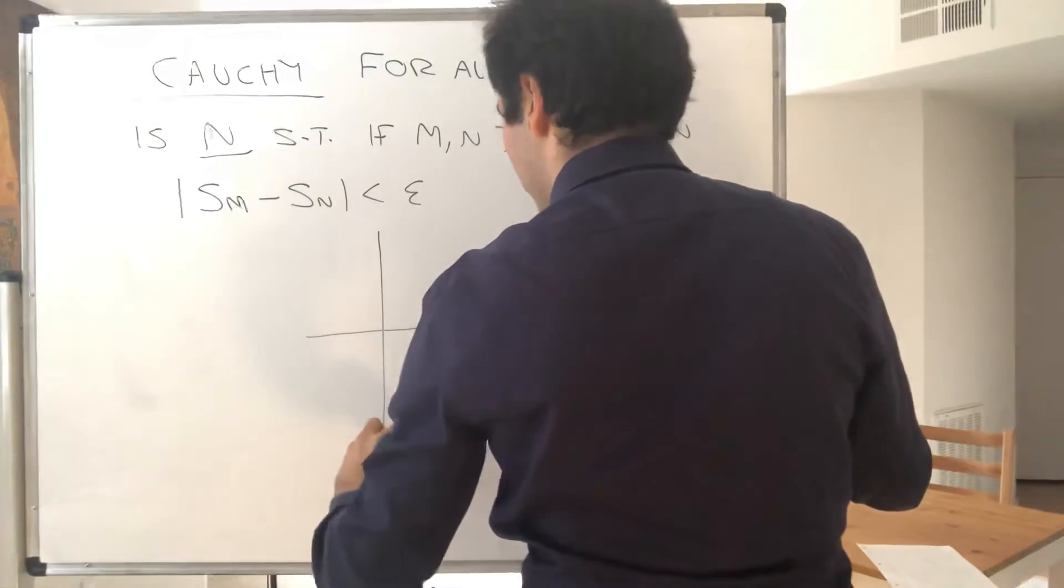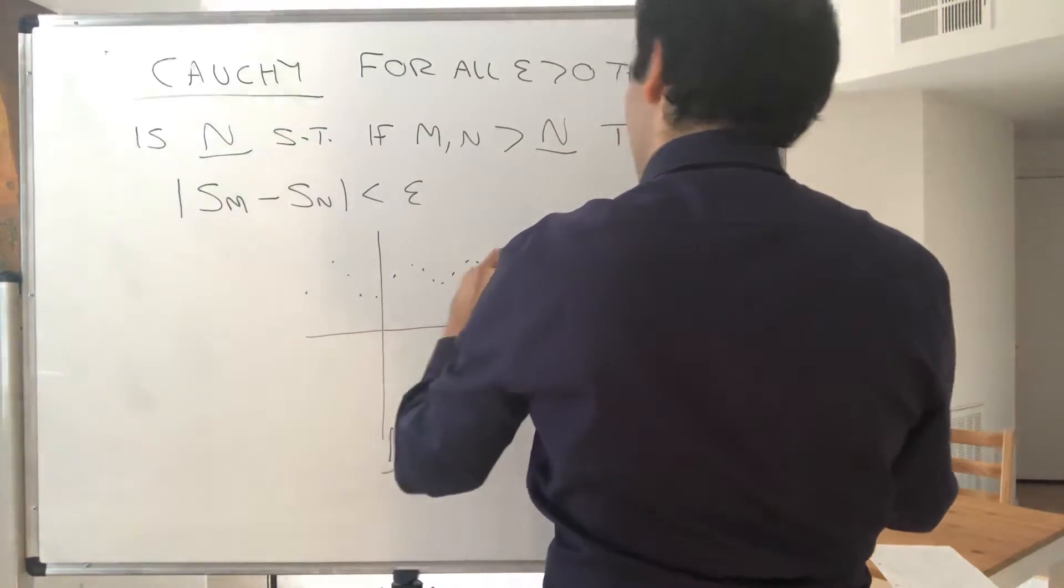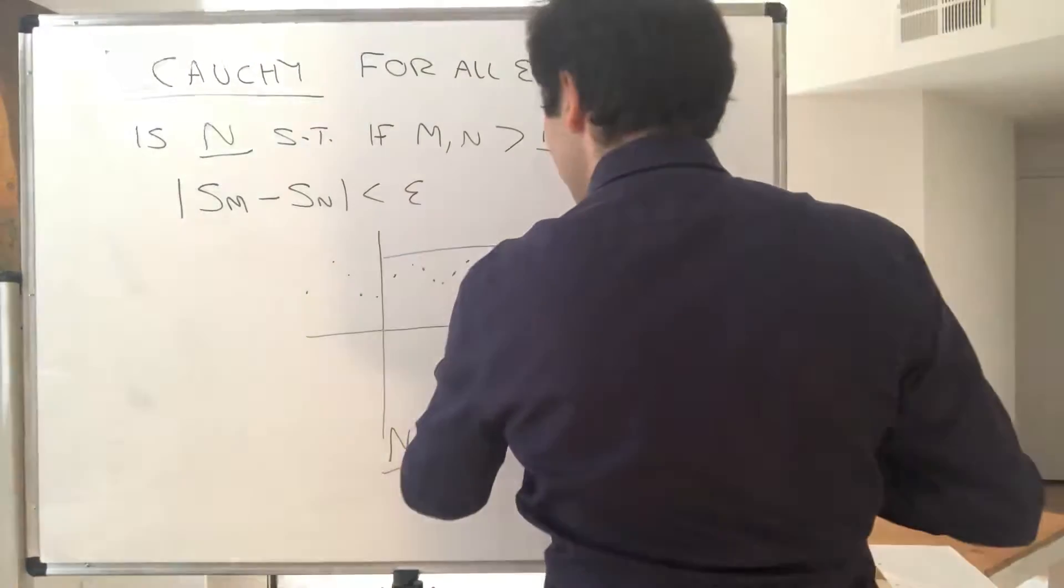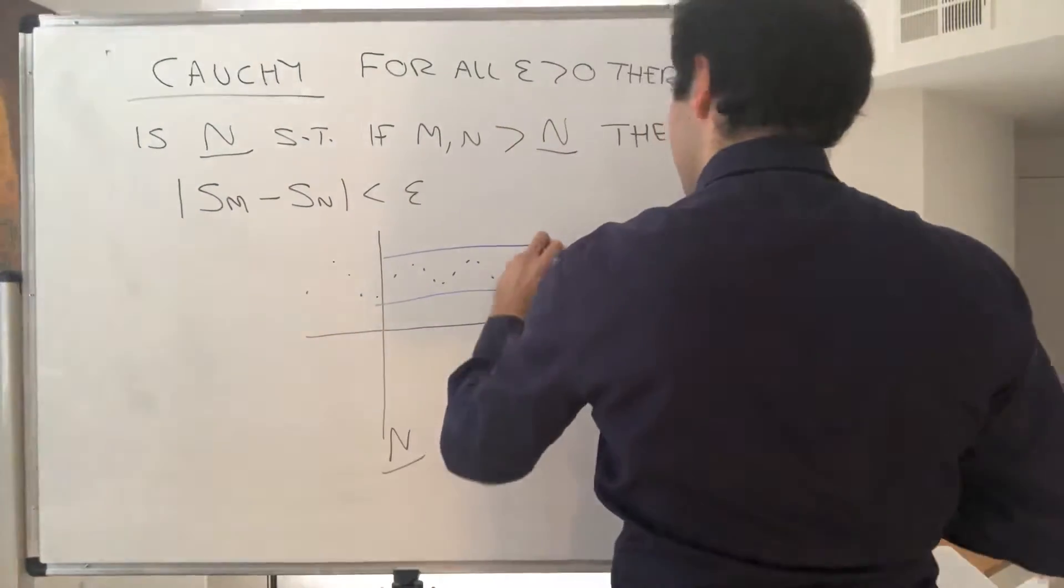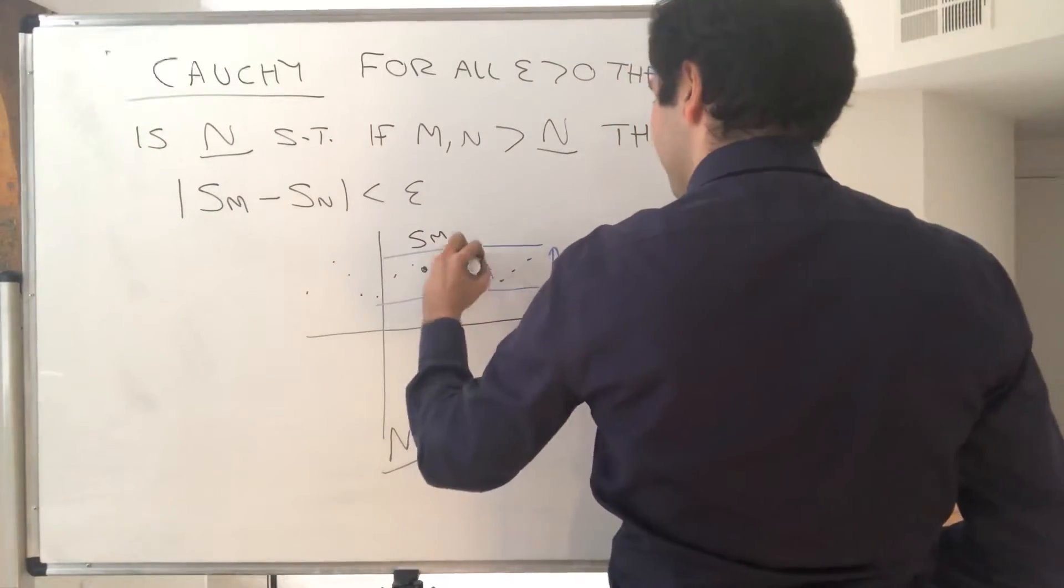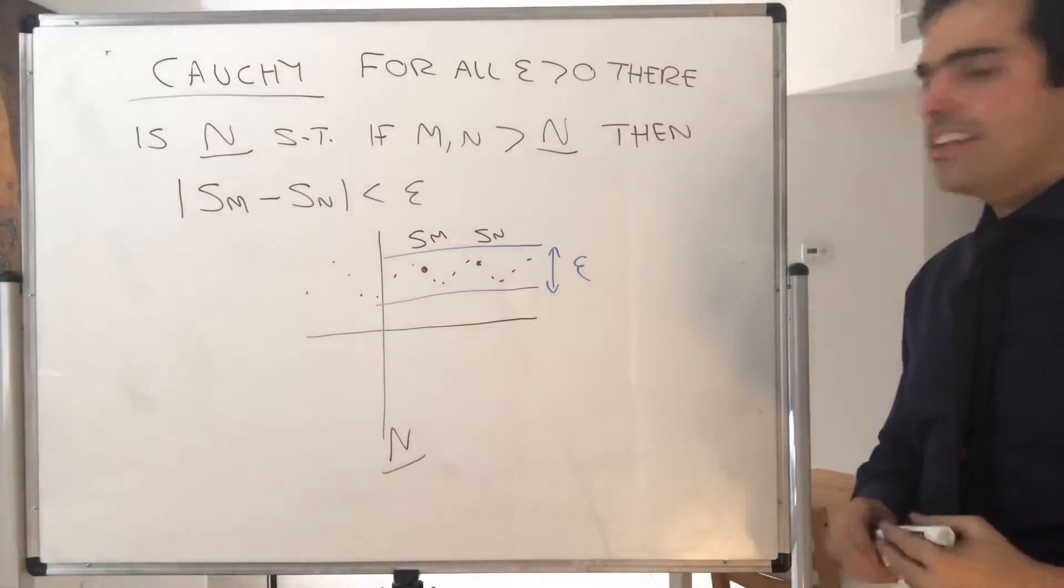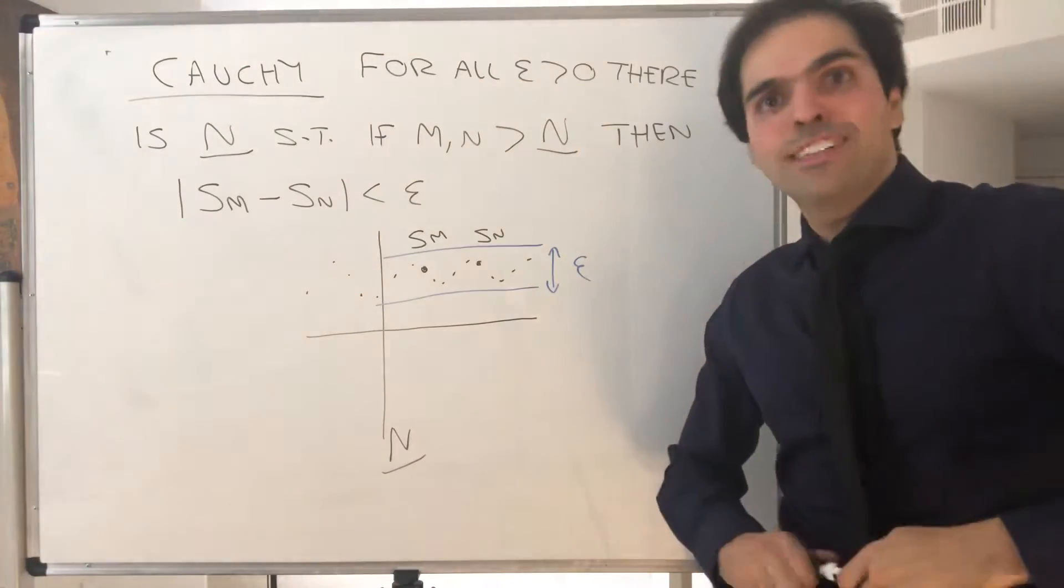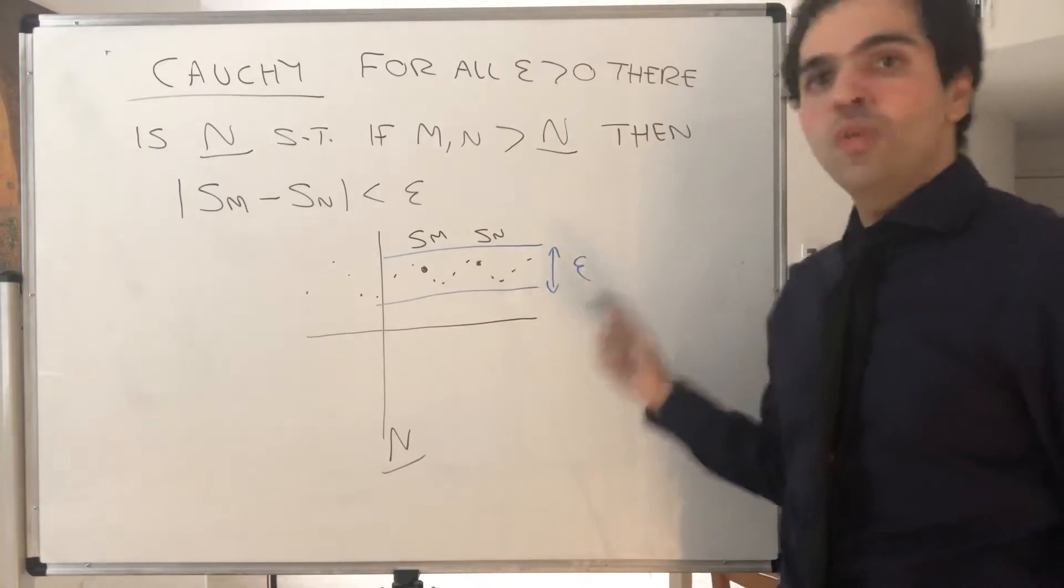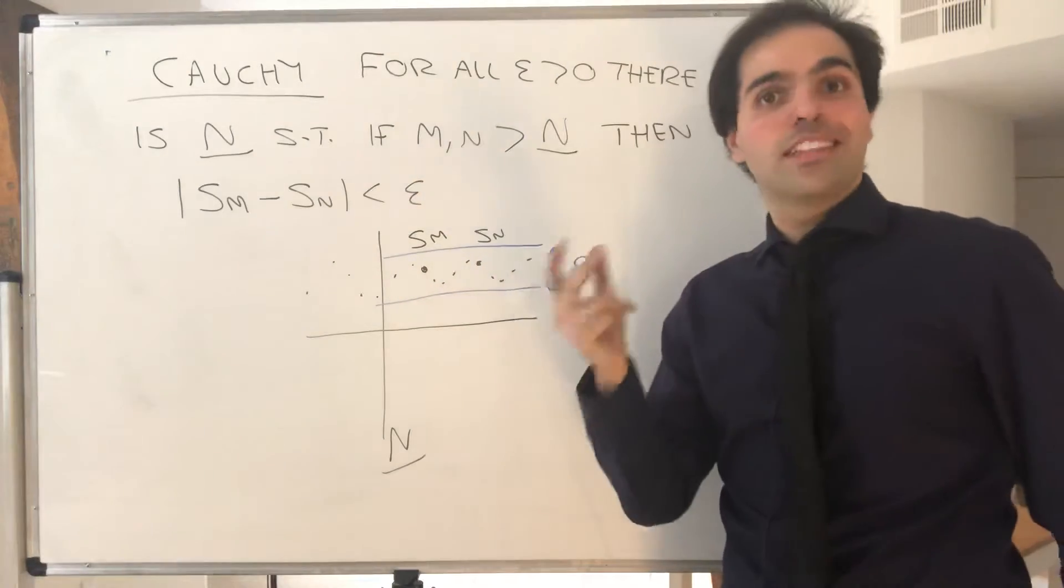In other words, no matter how small the error, there is some threshold capital N such that after this threshold all the values of the sequence are at most epsilon away. So let's say this is Sm, they're all in this good region.